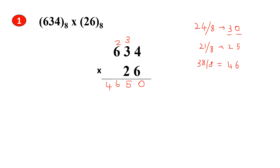Next, multiply 2 with 6, 3, 4. 2 into 4 gives us 8. 8 is not an octal number — it should be from 0 to 7, so divide by 8. We get 1 as the quotient and 0 as the remainder. Put 0 here as the sum and 1 as the carry. Next, 2 into 3 gives us 6, plus 1 is 7. 7 is an octal number.